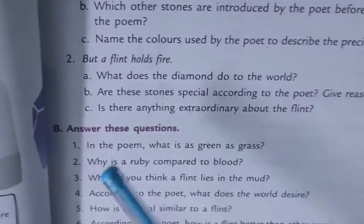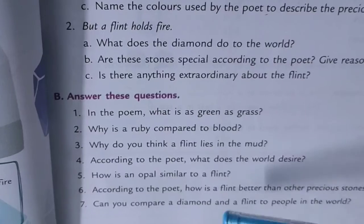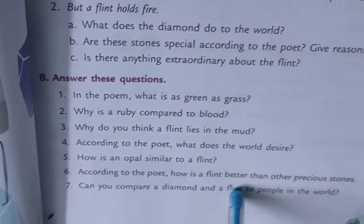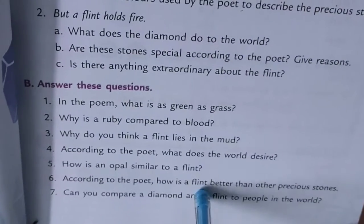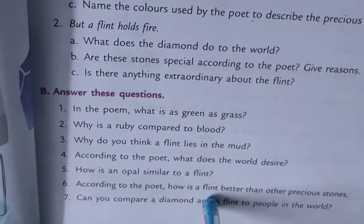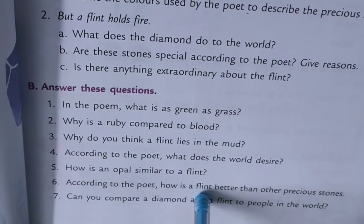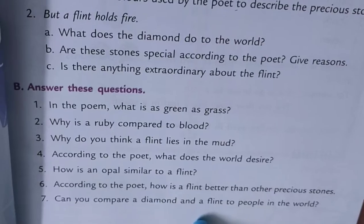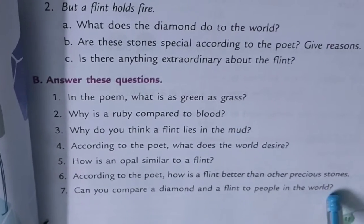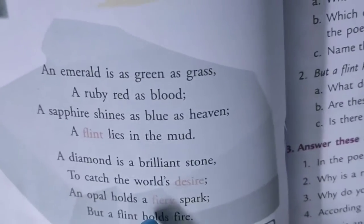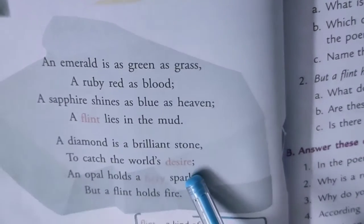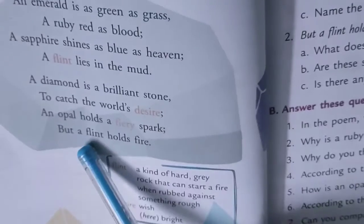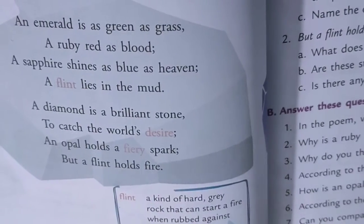Both are similar categories. A spark, if it is the bigger one, then there should be fire. According to the poet, how is a flint better than other precious stones? A flint can hold fire where people use it. And precious stones? Only stones are there. Can you compare a diamond and a flint to the people in the world? A diamond is related to the world's desires and a flint holds fire.